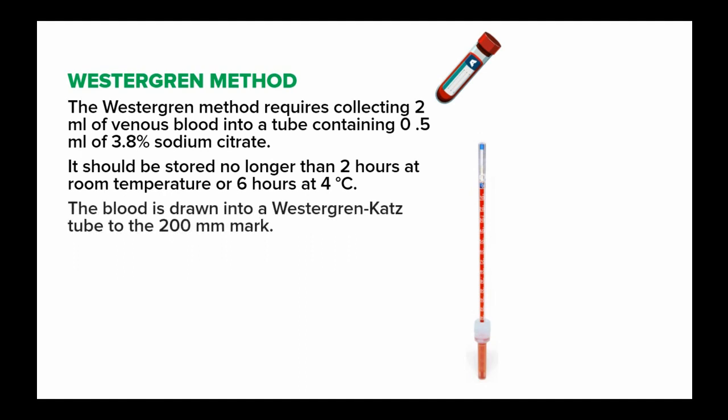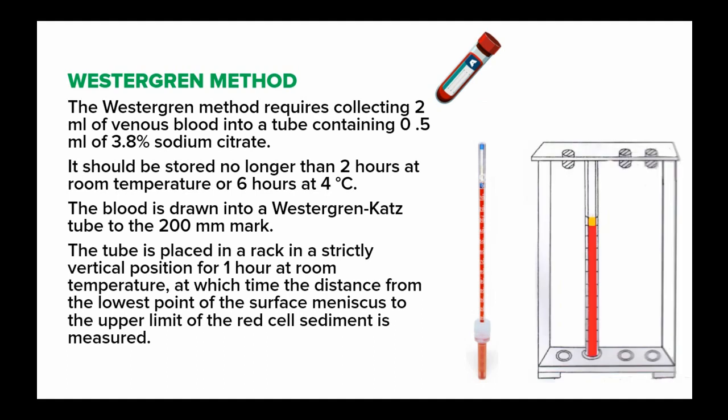The blood is drawn into a Westergren tube to the level of the 200 mm mark. This Westergren tube is placed in a rack in a strictly vertical position for an hour at a temperature of 25 degrees Celsius or room temperature, then the distance from the lower limit of the red cell segment is measured.